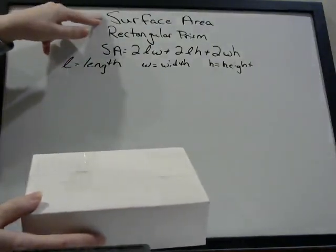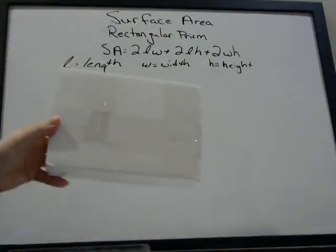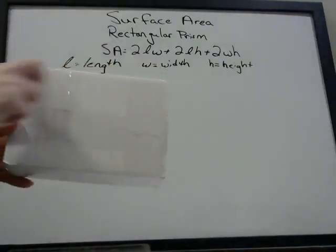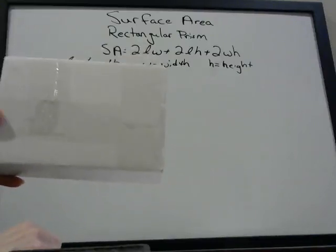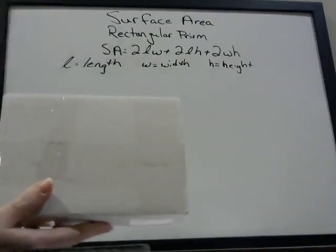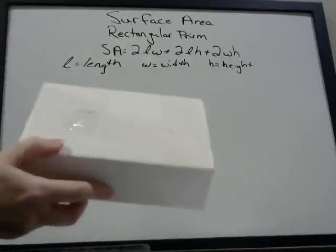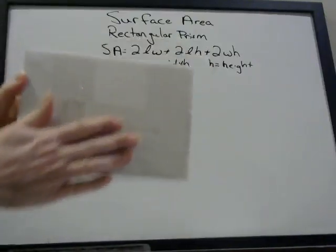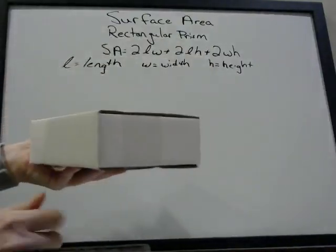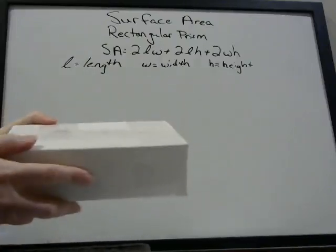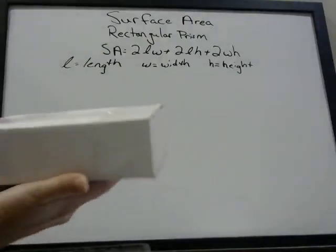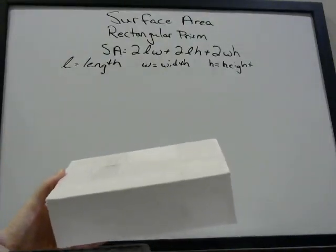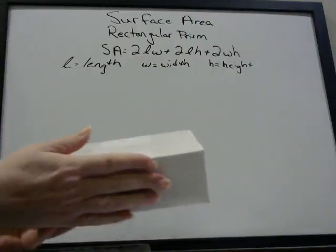Now when we talk about surface area, what does that mean? Remember when we were finding area of a rectangle, it was length times width. We're going to use that concept when we're talking about surface area. All surface area means is that you have a three-dimensional object where you don't just have one rectangle — you have a three-dimensional object in which all of the faces are rectangles, and you're going to find the total area of all of these faces together.